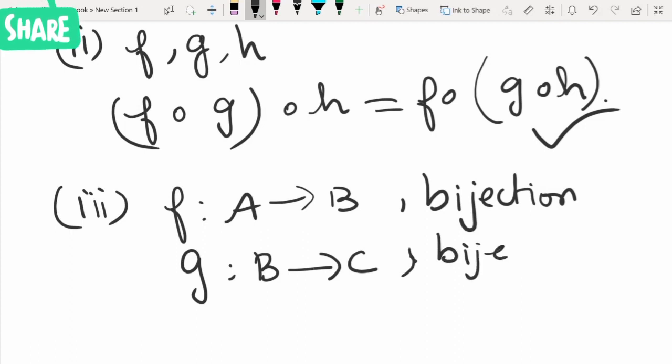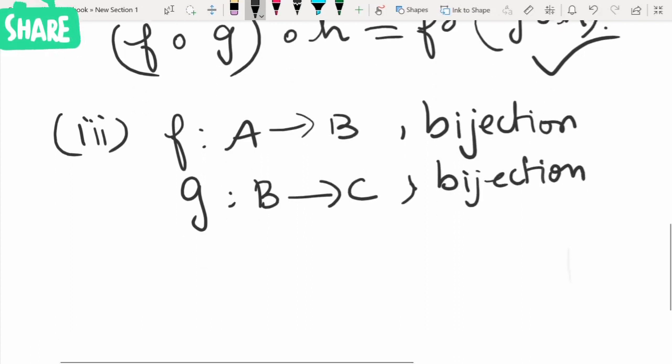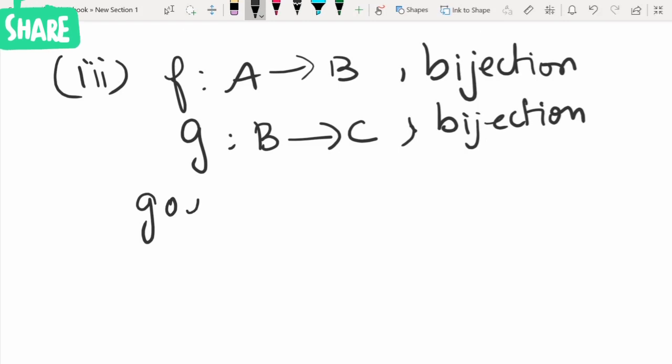then what about the composition function? g composition f from A to C will also be a bijection element.